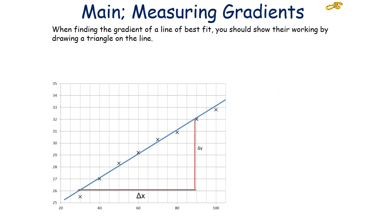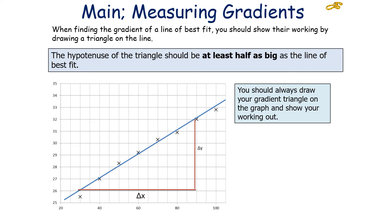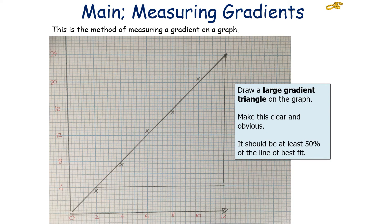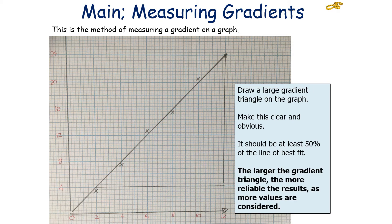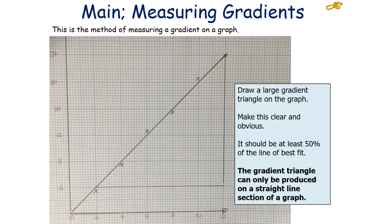When finding the gradient of a line of best fit, you should show your working by drawing a triangle on the line. The hypotenuse of the triangle should be at least half as big as the line of best fit. You should always draw your gradient triangle on your graph and show your working out — draw a large, clear, obvious gradient triangle that incorporates at least 50% of the line of best fit. If you do not show your gradient triangle on your graph, you will receive no marks for this particular skill. The larger the gradient triangle, the more reliable the results, as more values are being considered. The gradient triangle can only be used on a straight line section of a graph.